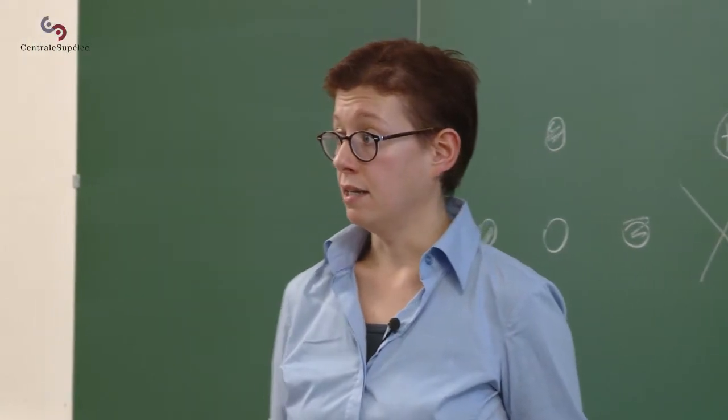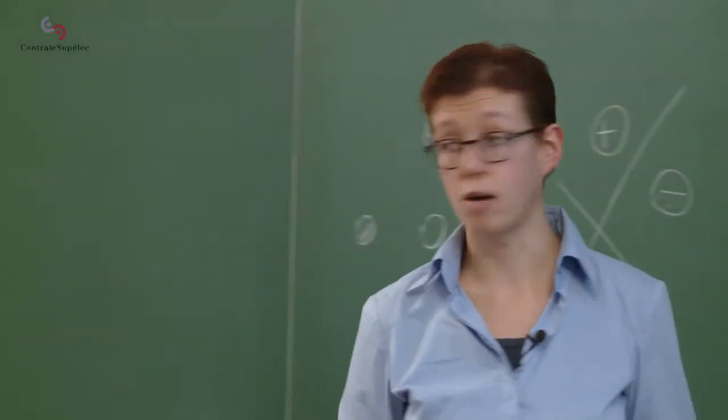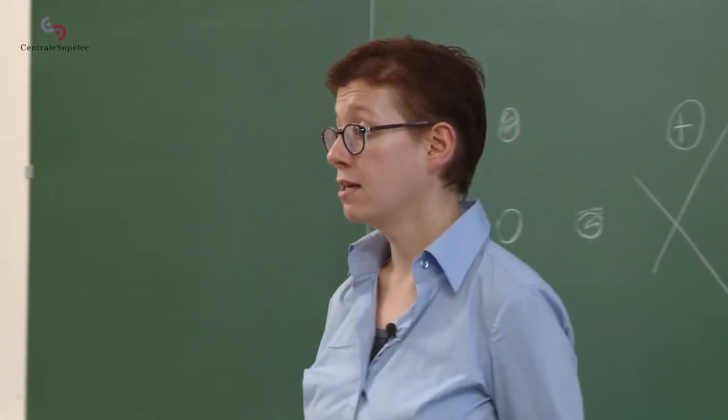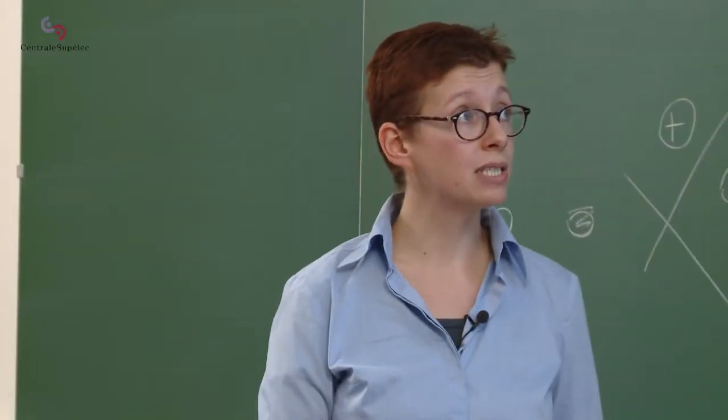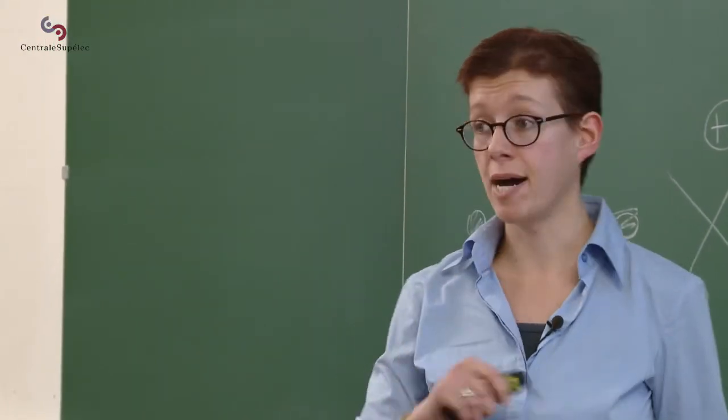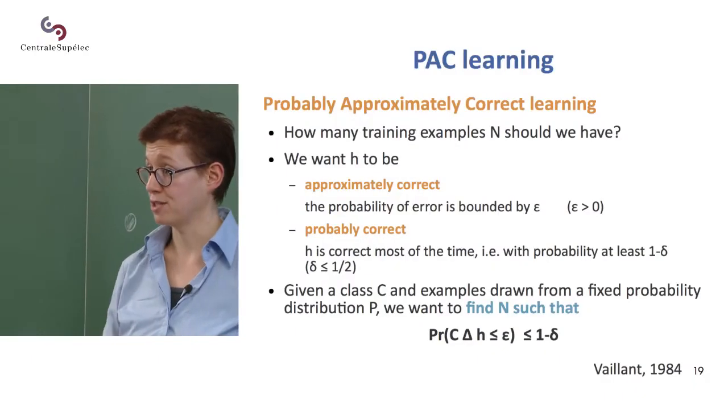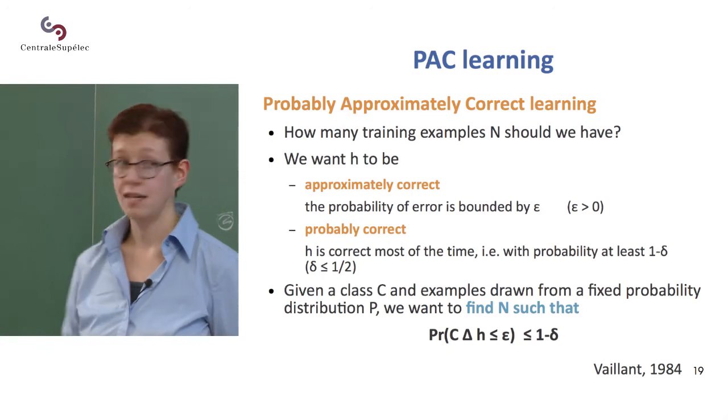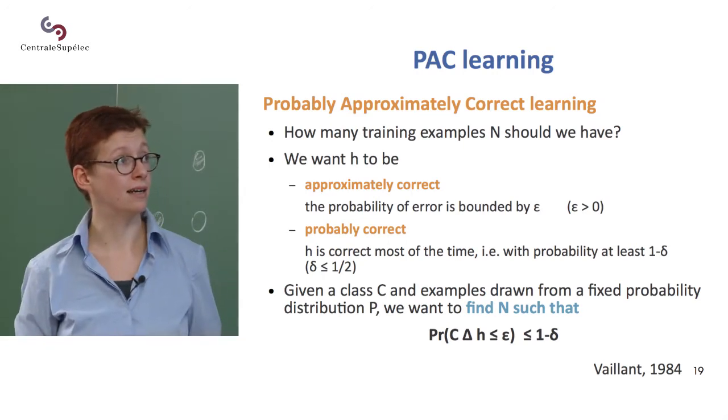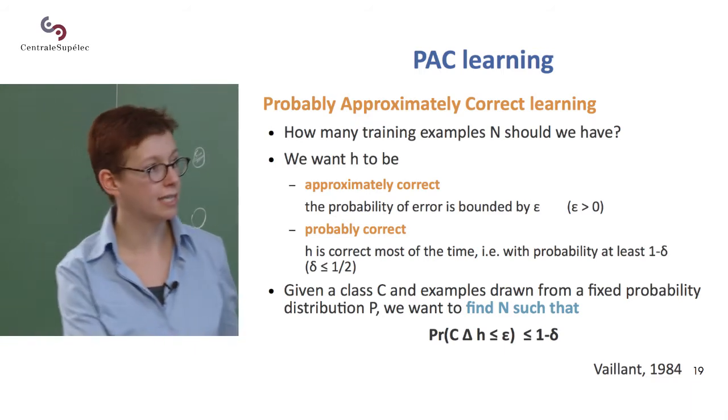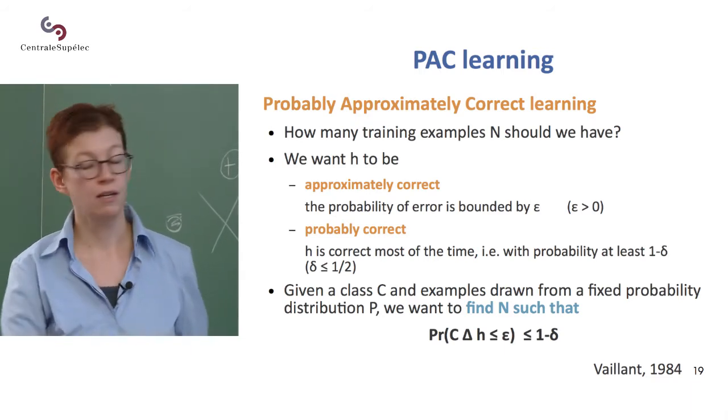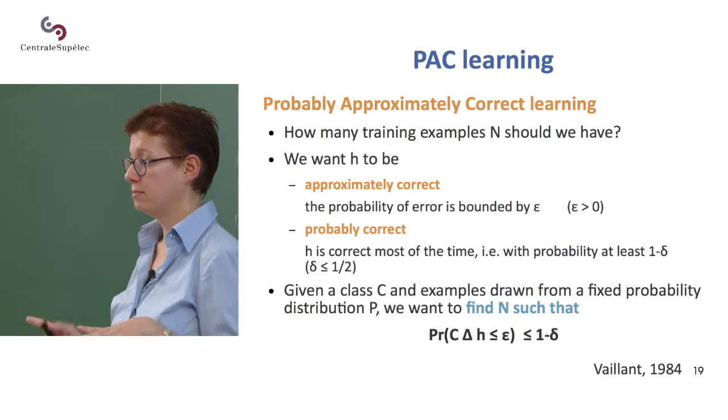And the probably means that we bound this error in most cases. So the probability of bounding this probability of making an error is at least one minus delta. So we're looking at a probability of a probability.